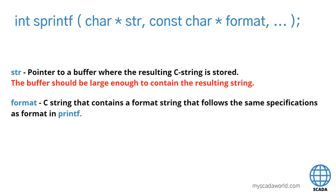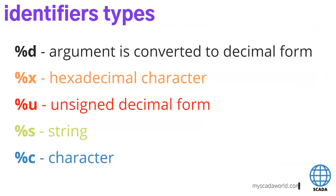The sprintf function is made with 'str', which is the pointer to the buffer where the result should be stored. This buffer should be large enough. The format is the same as in the printf function. You can go back to the printf function and check in detail how to use it — you have the identifier styles: %d, %x, %u, %s, %c, and so on. If you need examples of how to use these arguments, go to the printf video on YouTube.